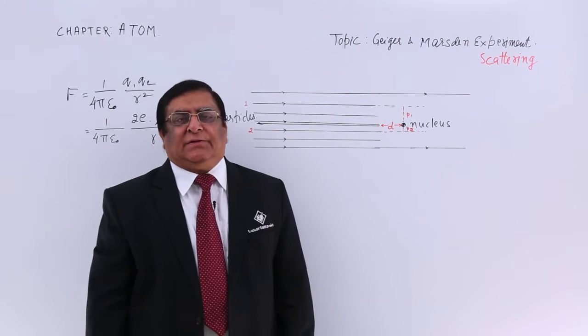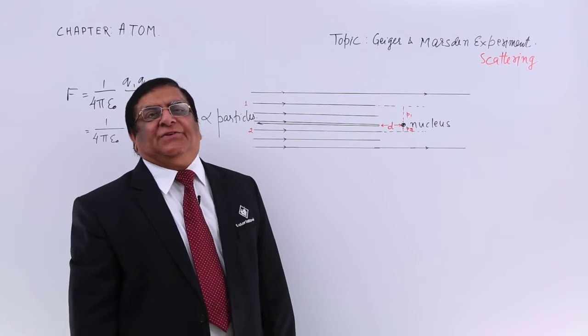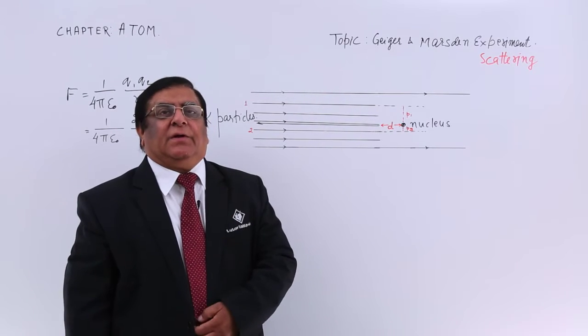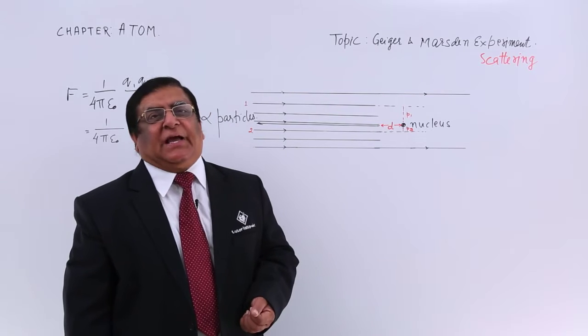In Geiger and Marsden experiment, we have seen that there is scattering of alpha particles that was done in the previous lecture. Now we will see certain details of this scattering.